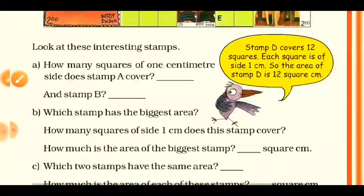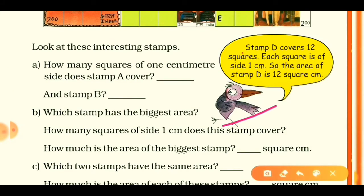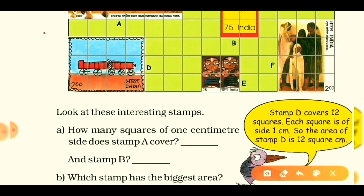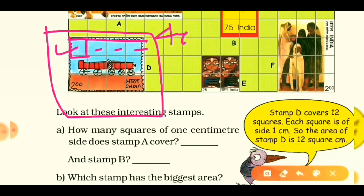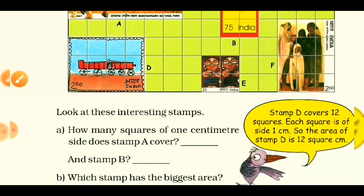Now let's check some questions. Here is a notice from a bird that stamp T covers 12 squares, and each square has a side of 1 centimeter, so the area of stamp T is 12 square centimeters. The stamp T has a length of 4 centimeters and a breadth of 3 centimeters. To find the area of a rectangle, multiply length and breadth: 4 × 3 = 12 square centimeters.